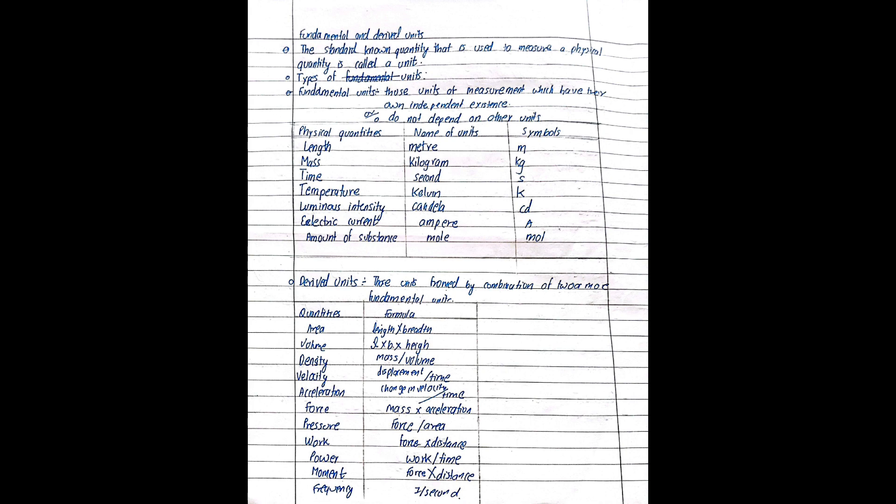We can define this as a system. In this system, fundamental units are physical conditions. It is important to understand the fundamental units. The fundamental units are those units, while derived units are combinations of two or more fundamental units.